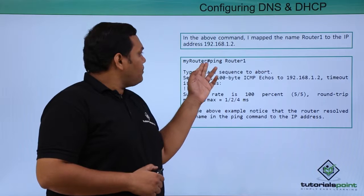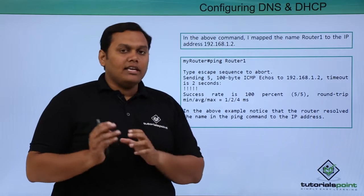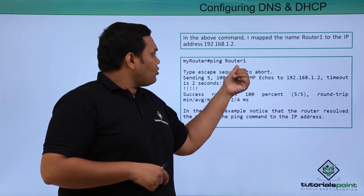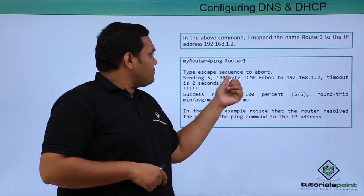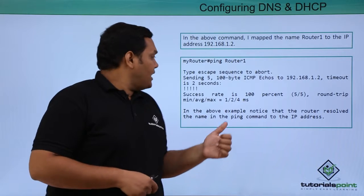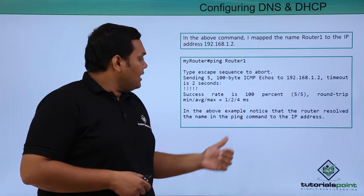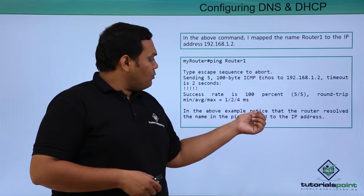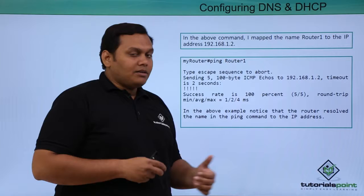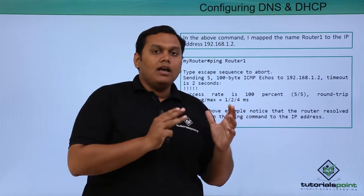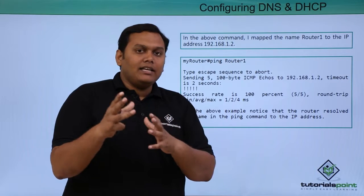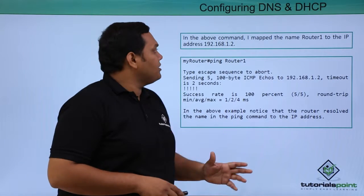When you ping router1, since we have already given the host mapping, it will send ICMP messages and you get a success rate of 100%. Notice that the router resolved the ping command to the IP address — the IP address and the ping command coincide and it gets a 100% response.